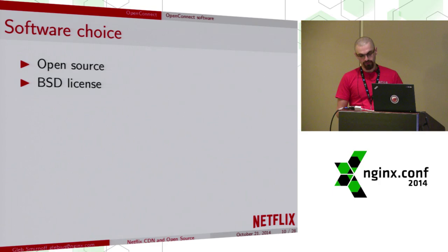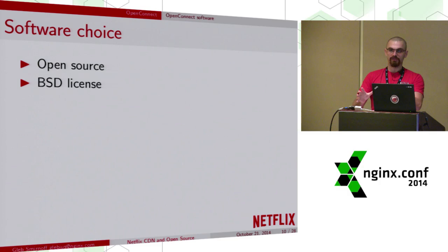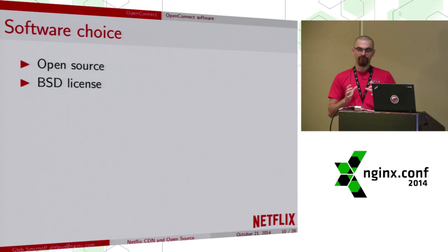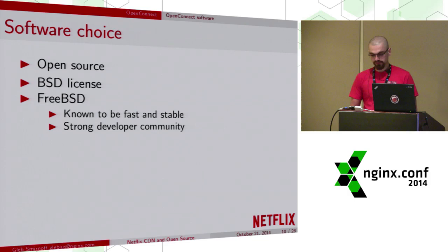Why did we choose these software components? As the Open Connect project started, it was clear from the very beginning that we are going to push the limits and get more and more gigabits per second from a single box. We needed to start with an open source product that we can actually modify. And since we give away the appliances to ISPs, involving a third party, we need them to be BSD licensed — because GPL is tricky in the legal area when it comes to giving away to a third party.